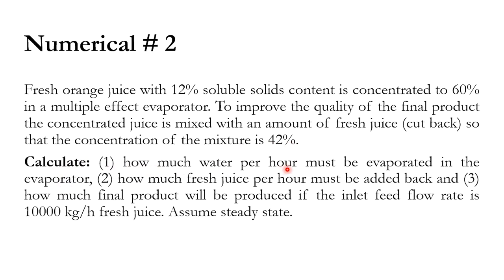The three parameters to calculate are: (1) how much water per hour must be evaporated in the multiple-effect evaporator; (2) how much fresh juice per hour must be added back to reduce the concentration from 60% to 42%; and (3) how much final product will be produced — given an inlet feed of 10,000 kg/hr of fresh juice.